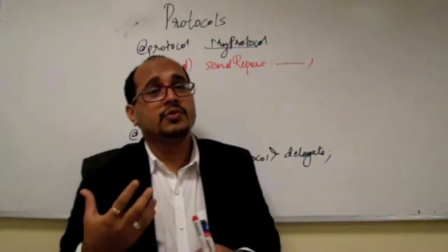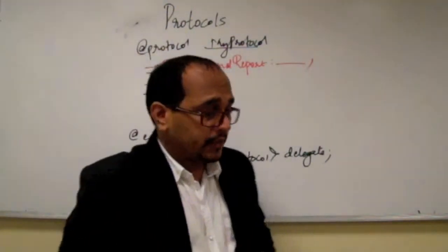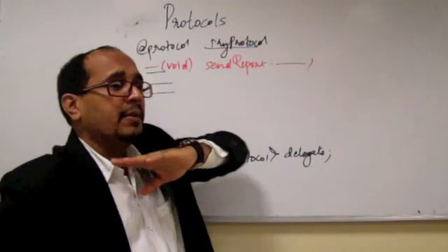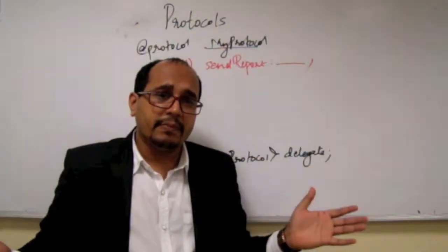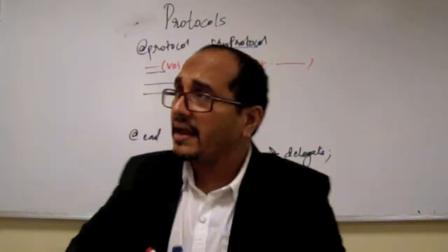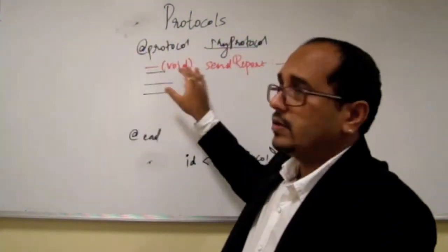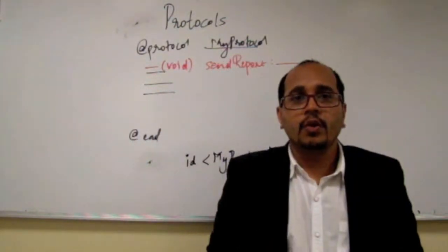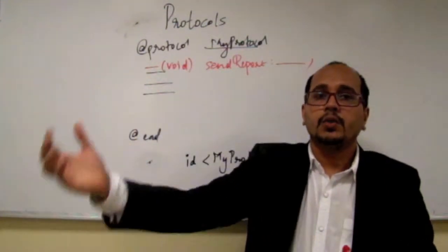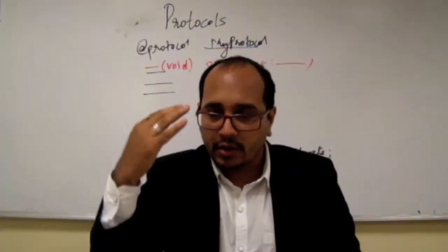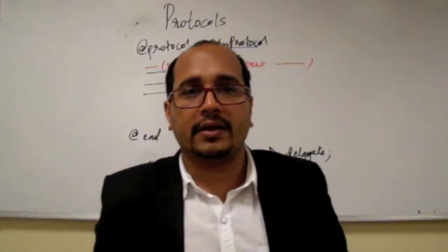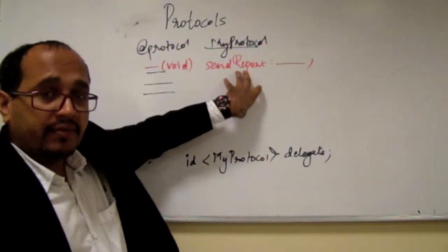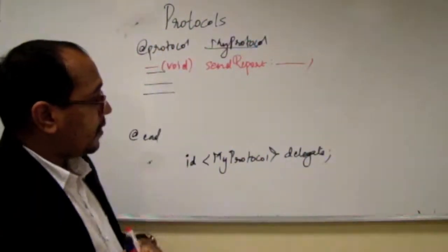Protocol itself is a huge concept. It can be declared once, implemented many times in many places, and the message can be called. There is nothing called automatic control coming — the control needs to be passed somewhere. You decide which class the control should go to, and it can be called in many places.